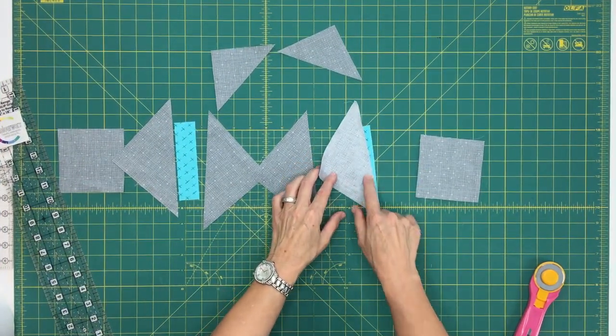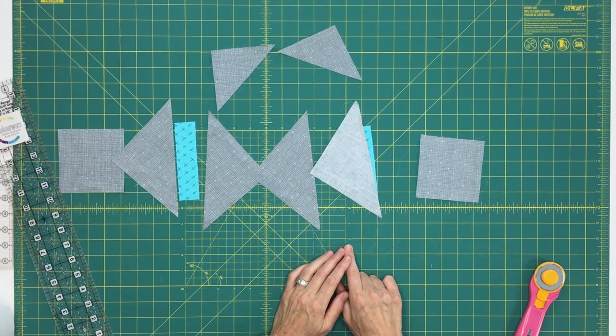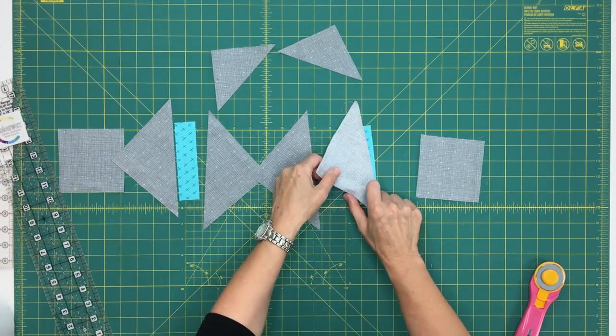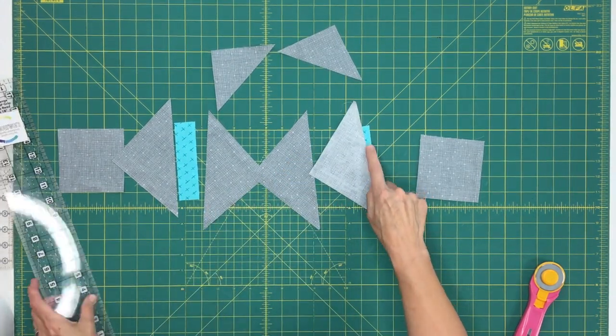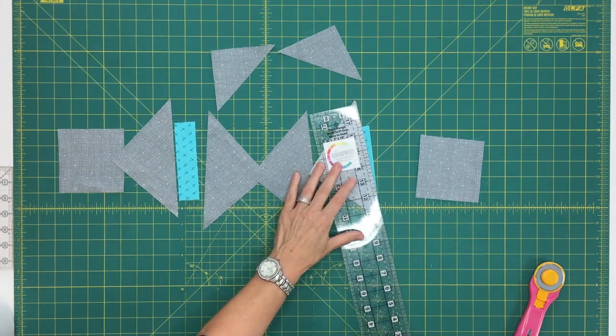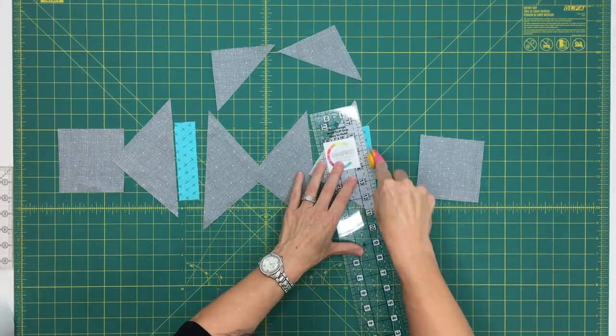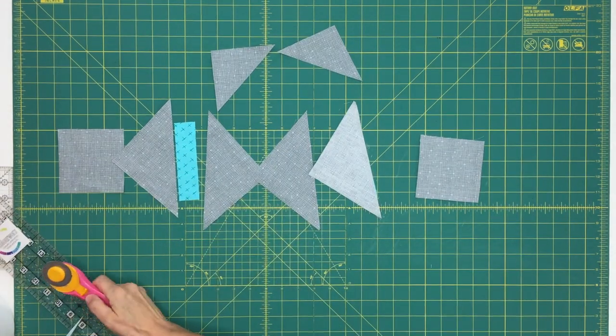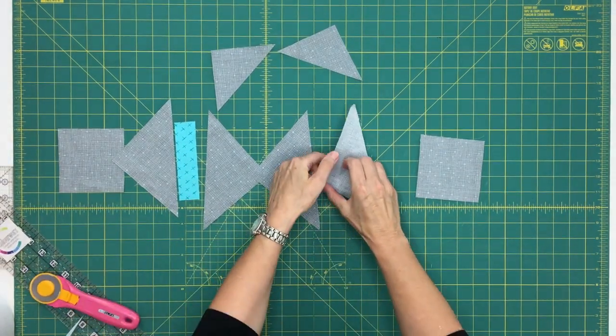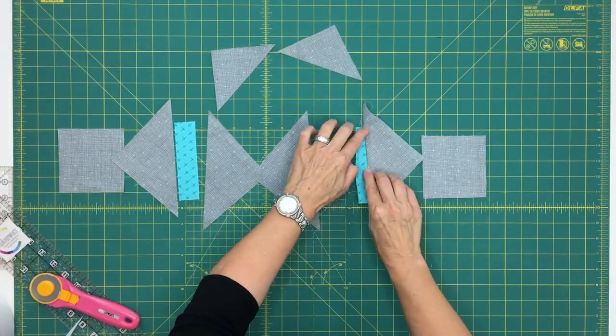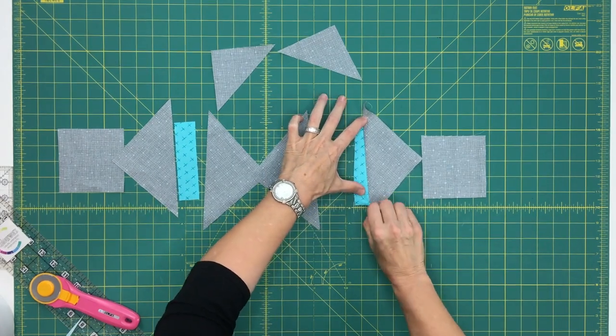So we're back and I have now stitched on the outer background triangle to the right side of my antenna unit here. I'm just going to go ahead and cut away this extra antenna to decrease all the fabric and reduce the bulk in my seam allowance. And I'm going to finger press this background triangle outward just like that.